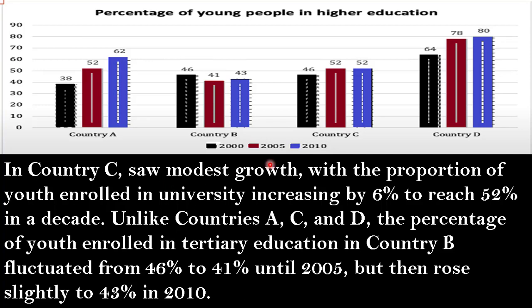Body paragraph 2: Country C saw modest growth, with the proportion of youth enrolled in university increasing by 6 percent to reach 52 percent over the decade. Unlike Countries A, C, and D, the percentage of youth enrolled in tertiary education in Country B fluctuated, falling from 46 percent to 41 percent until 2005, but then rising slightly to 43 percent in 2010.